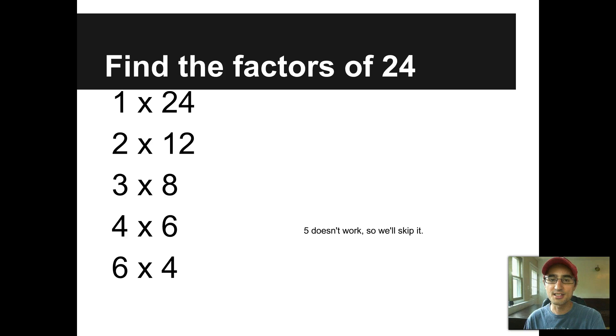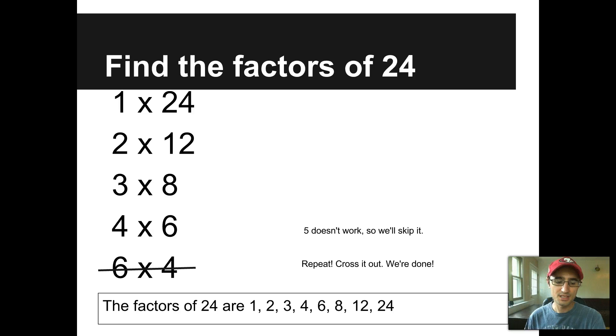After five comes six. Six times four looks like something we've already seen. So that's a repeat. We can cross it out. That tells us we're done listing factors. Now if I list them in order, the factors of 24 are one, two, three, four, six, eight, 12, and 24. In this case, we have eight factors, whereas with the 16 we only have five factors. There's always going to be a limited amount of factors, but that number can vary from problem to problem.